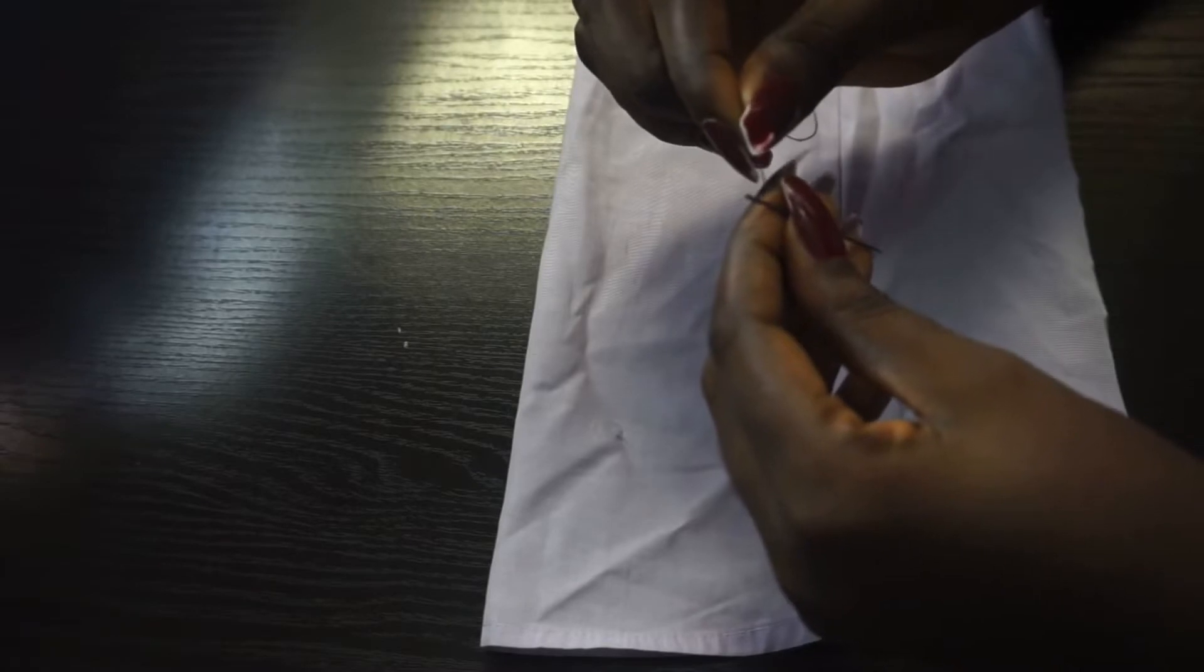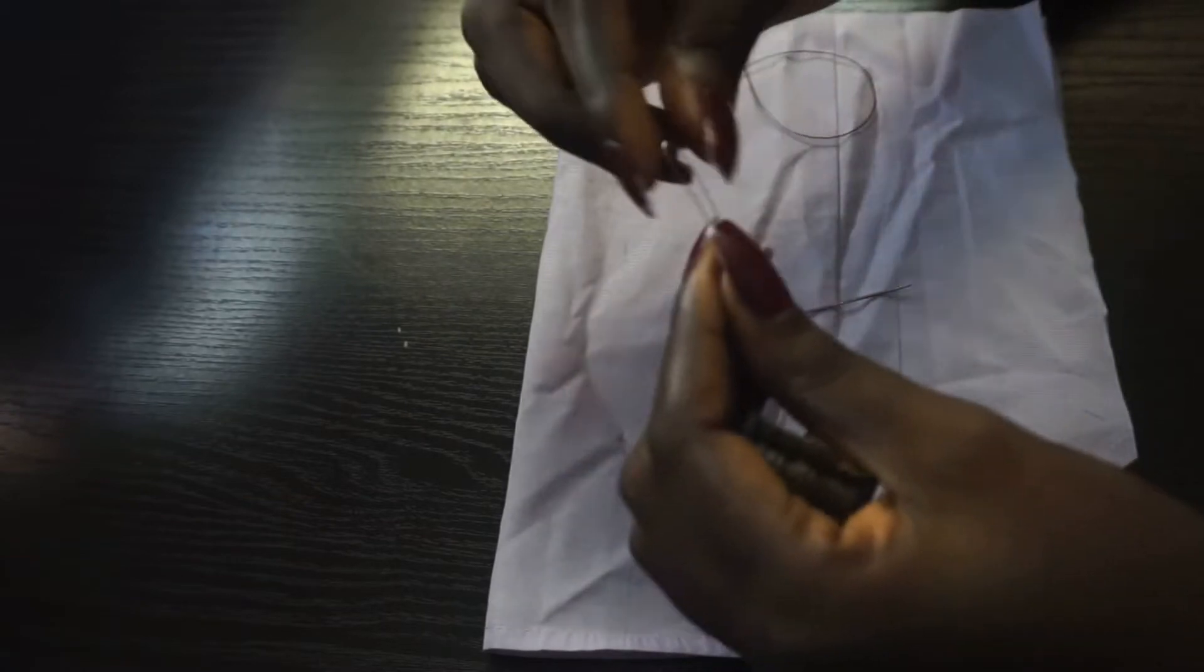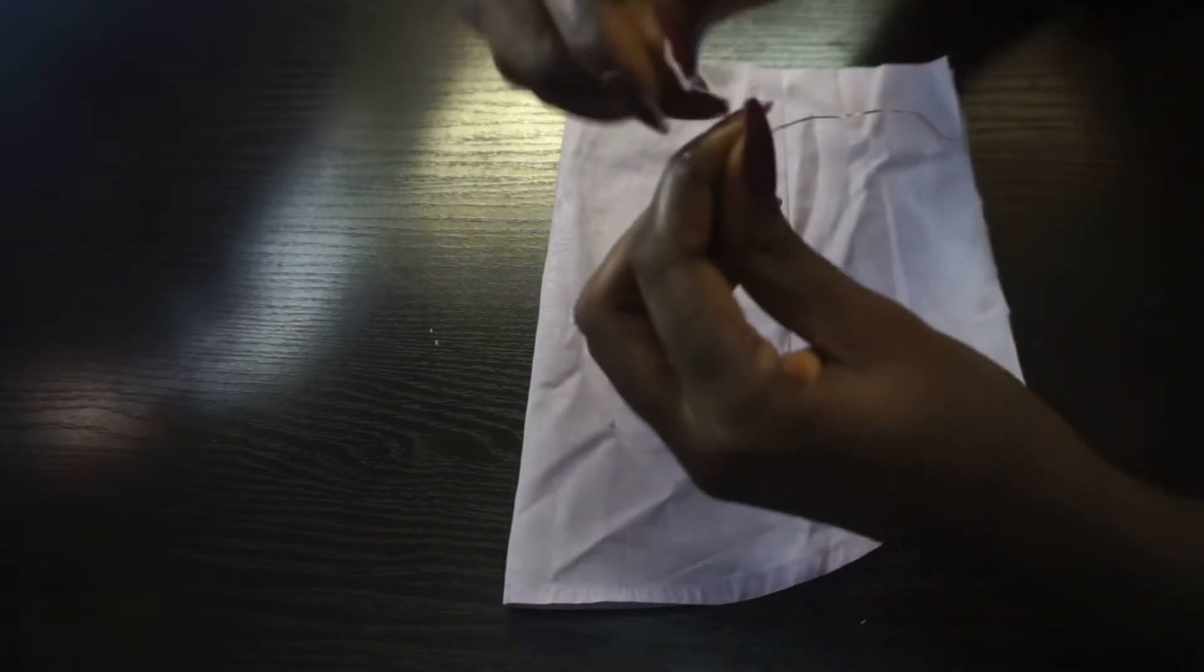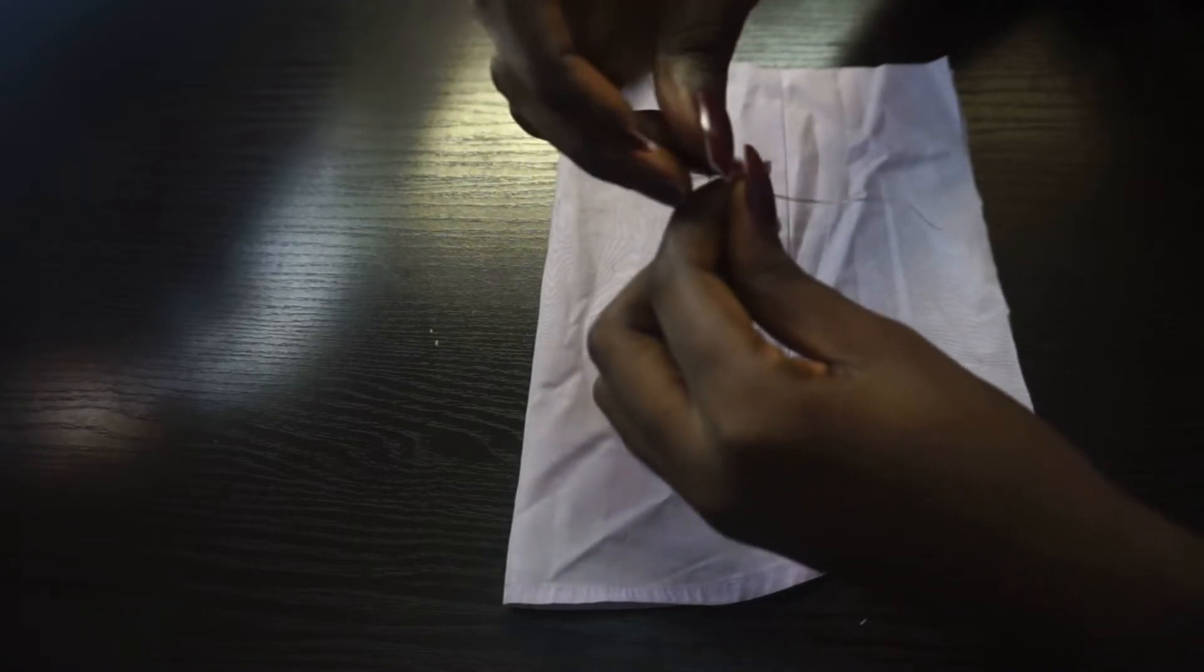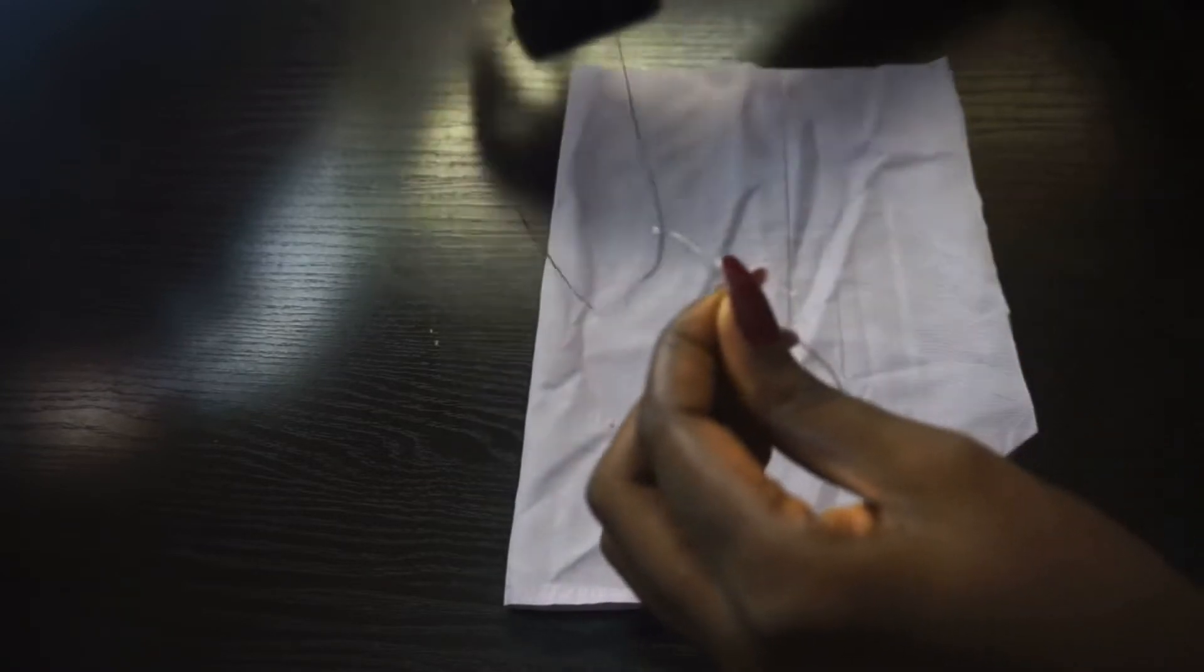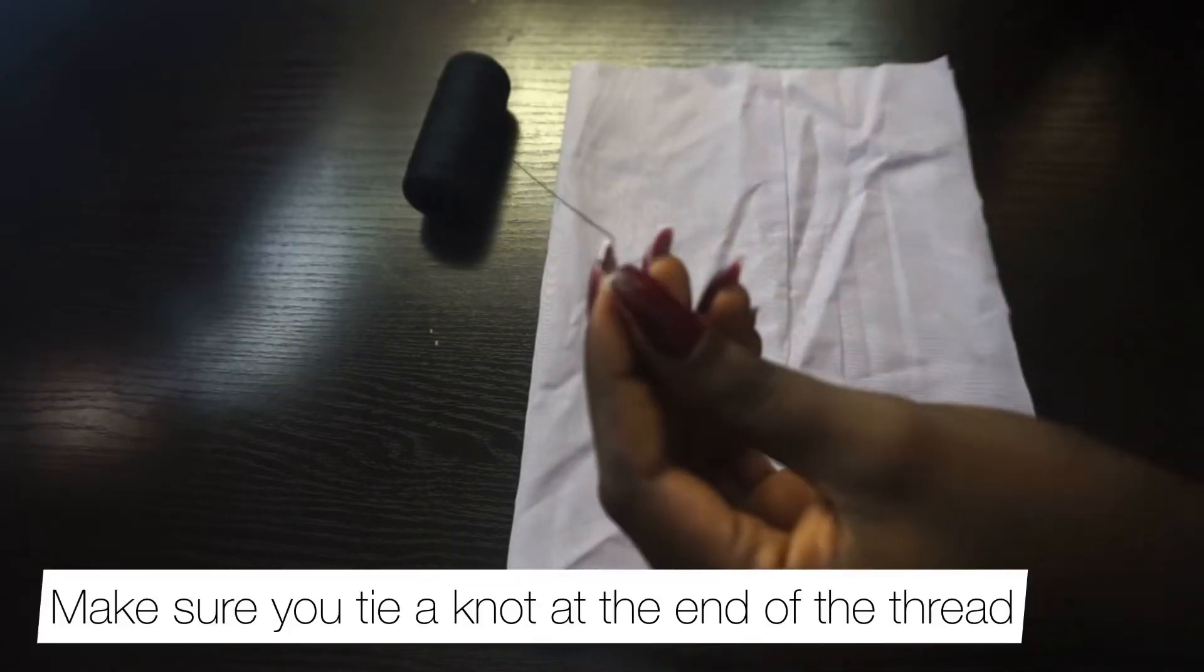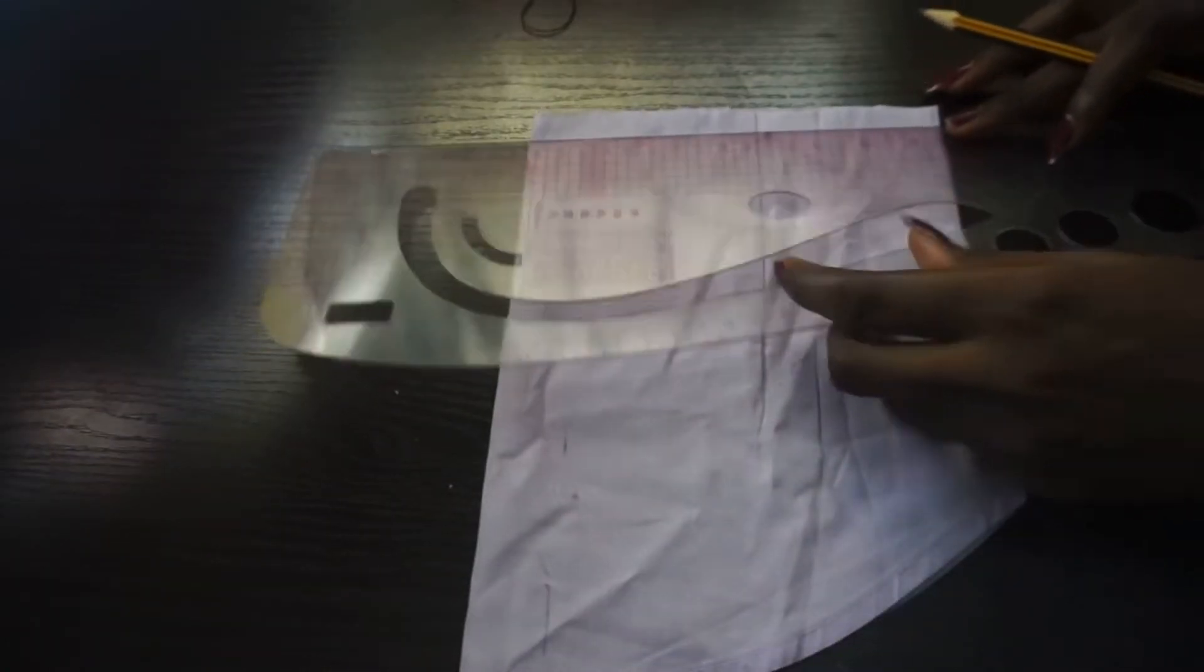Now I know most people have issues with threading, so this is a simple hack that you can use to get your thread into your needle. Bend it like so, then put it through. Put your thread into the loop that you've created, like so, and drag it out. When you are taking a certain amount out, you can now drag the wire out of the needle hole like so, and then you tie your needle. That's simple.